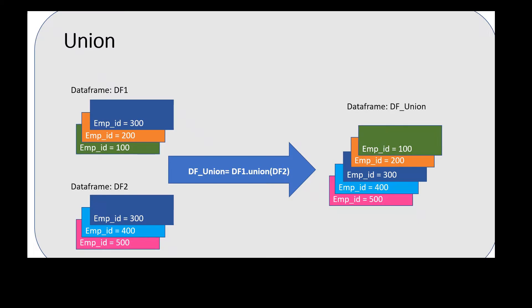I have created a simple diagram to illustrate the functionality of union and union all. For union, let's say data frame one df1 contains three records: employee ID 100, employee ID 200, and employee ID 300. The second data frame df2 contains employee ID 300, employee ID 400, and employee ID 500. Now we are merging all the records using the union function with the syntax df1.union(df2).